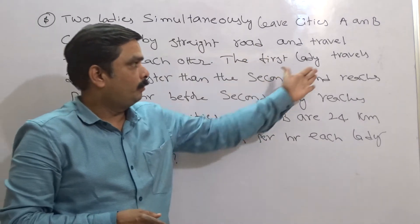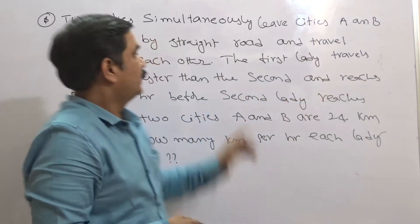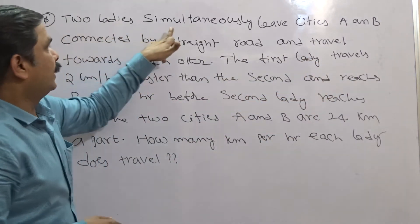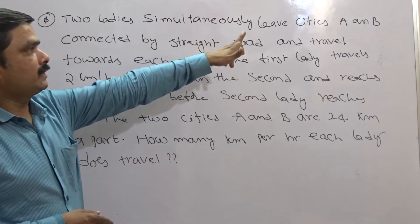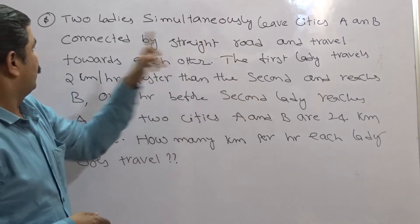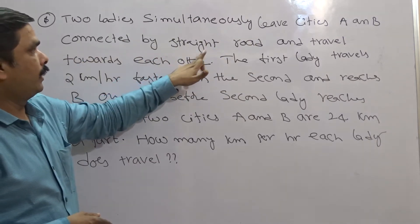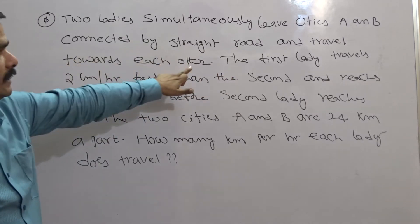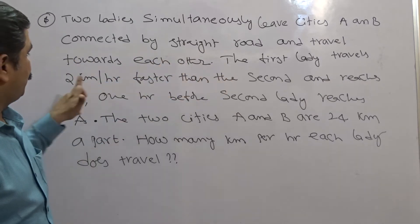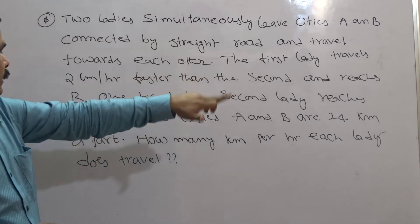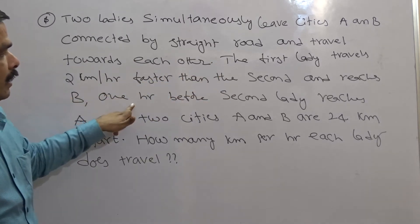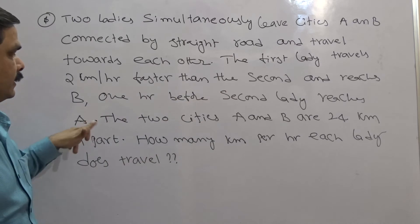You try to solve this question. Please make a note of this one first. The question is like this: two ladies simultaneously leave cities A and B connected by a straight road and travel towards each other. The first lady travels 2 kilometers per hour faster than the second and reaches B one hour before the second lady reaches A.